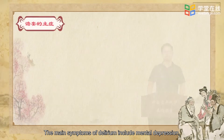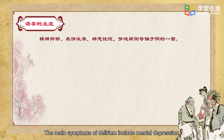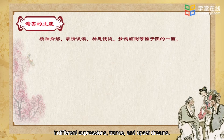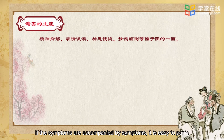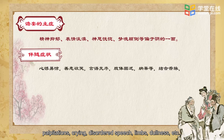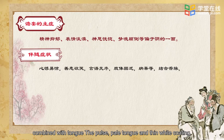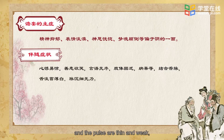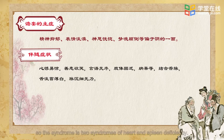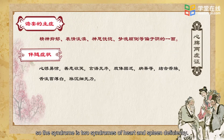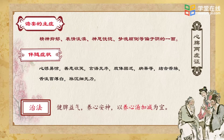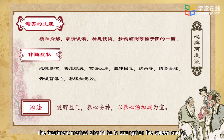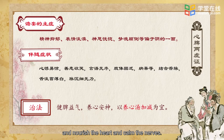The main symptoms of delirium include mental depression, indifferent expressions, trance, and upset dreams. If accompanied by symptoms such as palpitations, crying, disordered speech, limb dullness, etc., combined with pale tongue, thin white coating, and thin weak pulse, the syndrome is heart and spleen deficiency. The treatment method should be to strengthen the spleen and qi, and nourish the heart and calm the nerves.